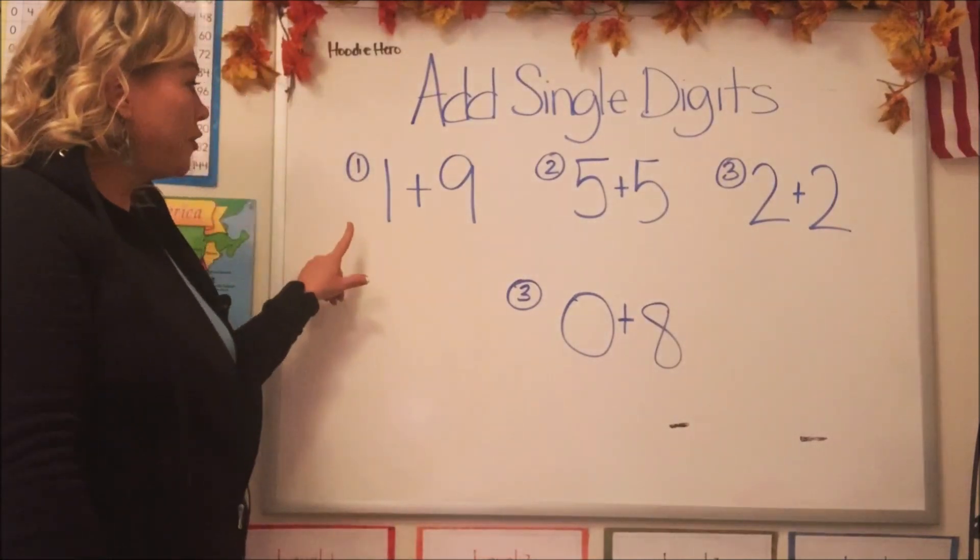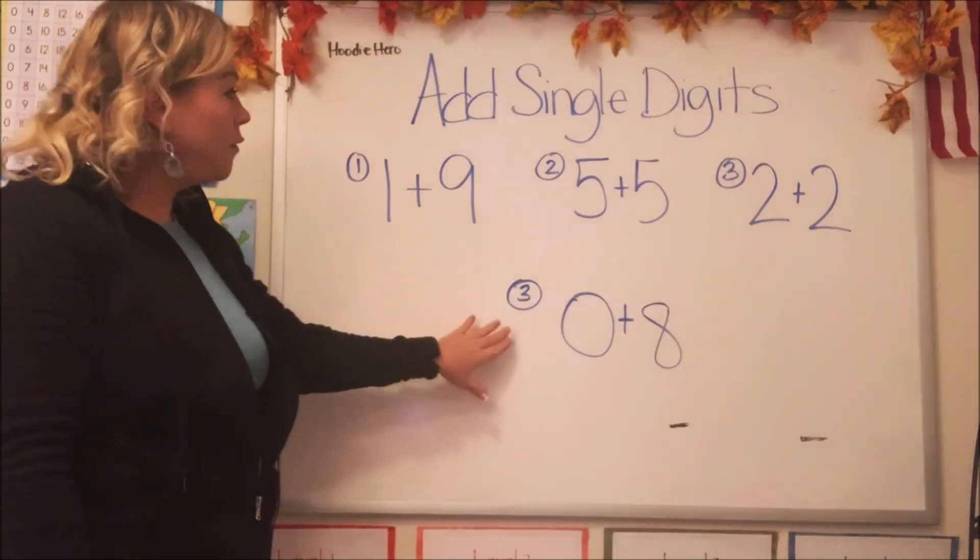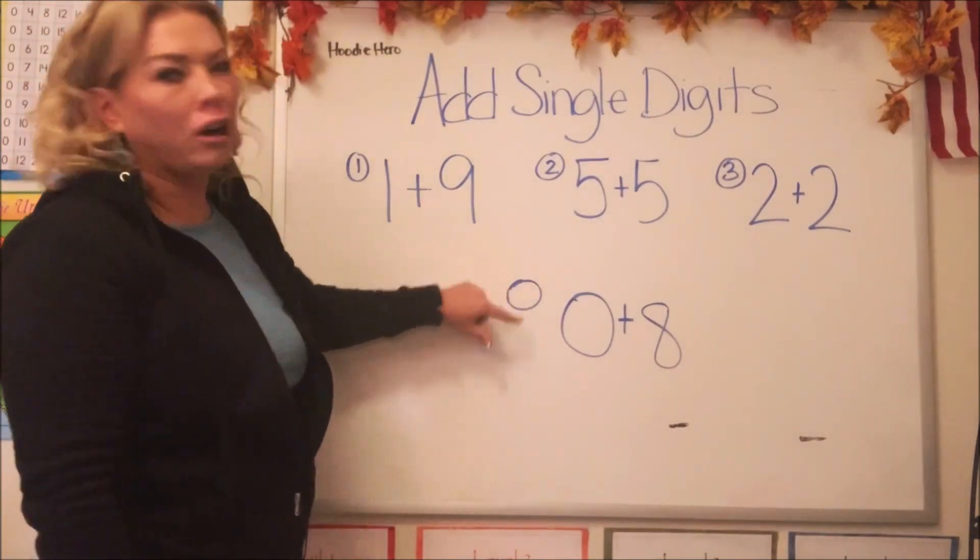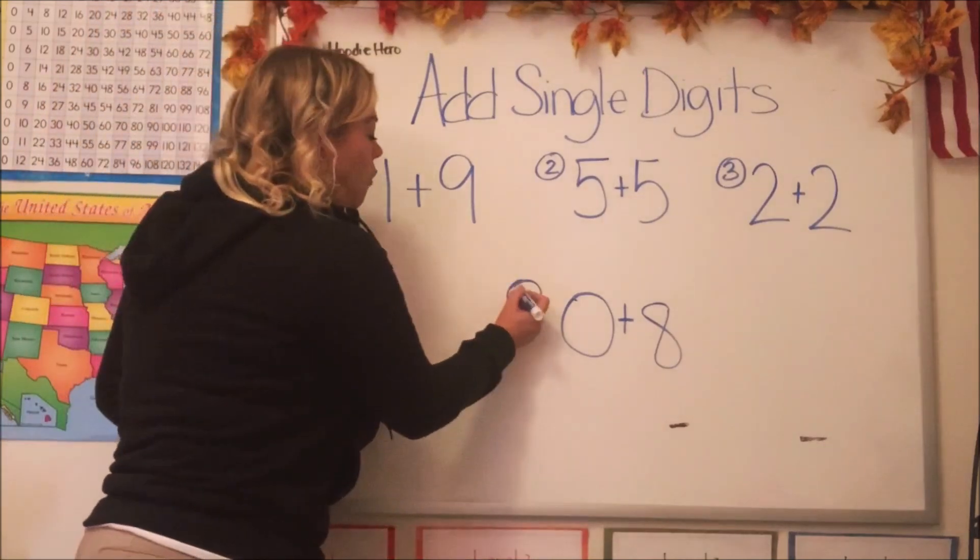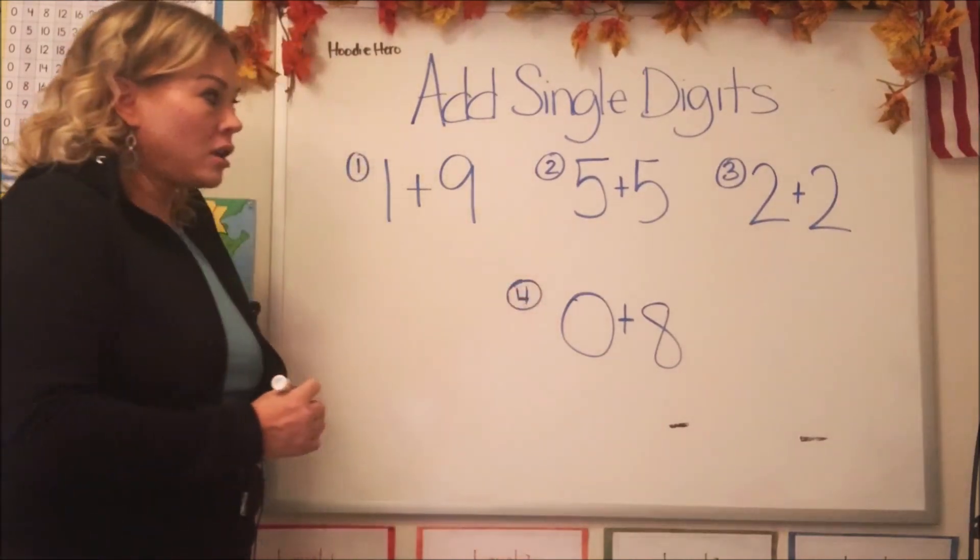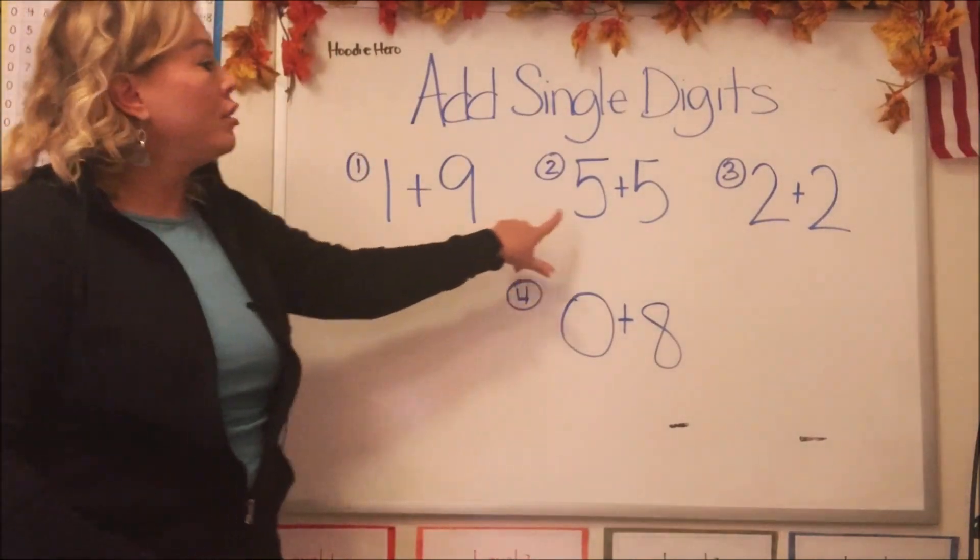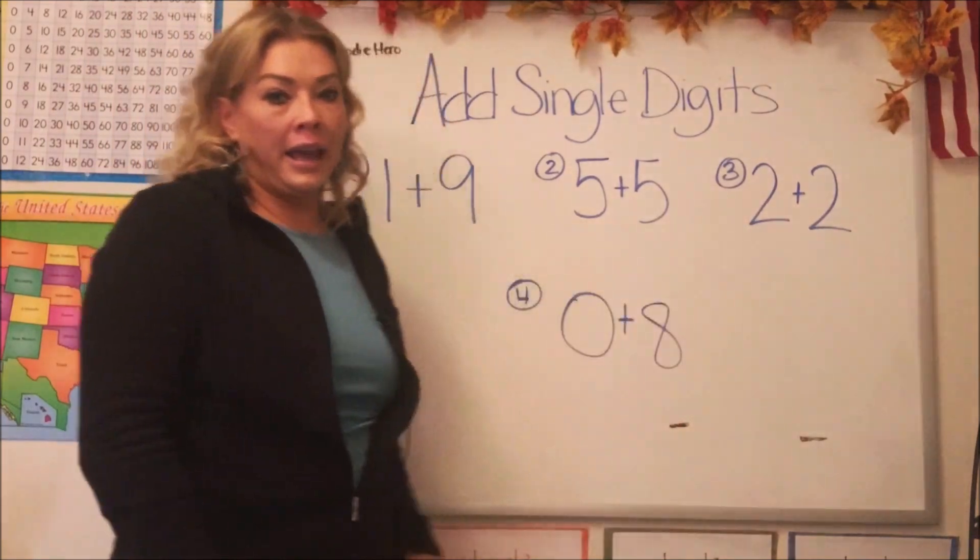So I have three numbers on here. I'm sorry, four. That's actually number four. Let's fix that. Okay, so I have four math problems on here where we're adding two digits together.